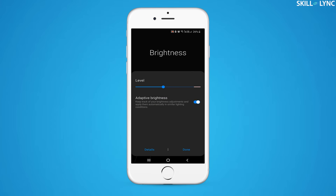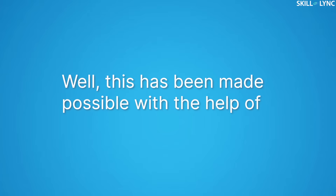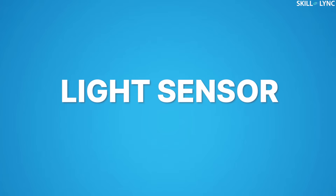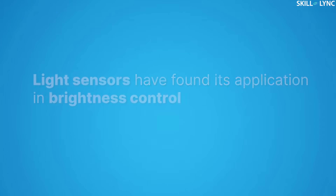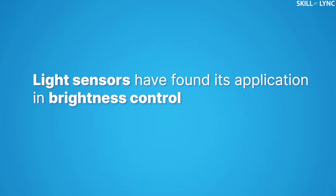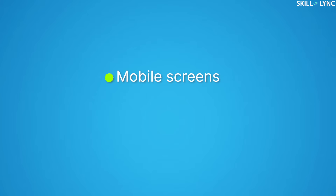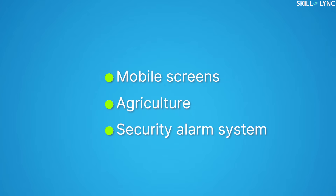Welcome back to the channel. Have you ever explored the auto brightness mode on your phone? It's interesting how with changing light the screen brightness automatically adjusts itself. This has been made possible with the help of light sensors. Light sensors convert light energy into electrical energy. Their applications range from brightness control in mobile phones to agriculture to security alarm systems.